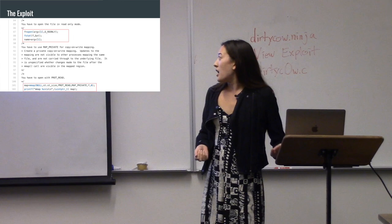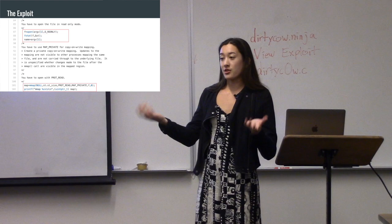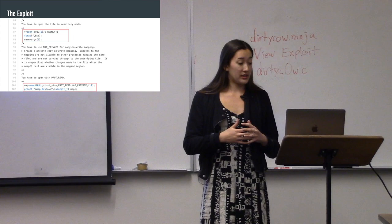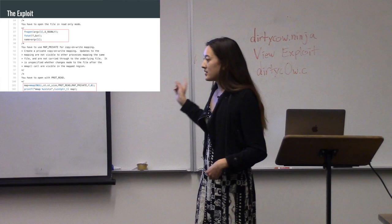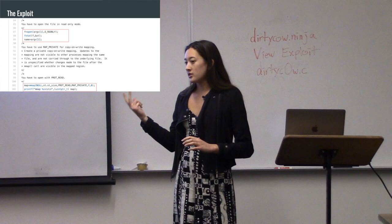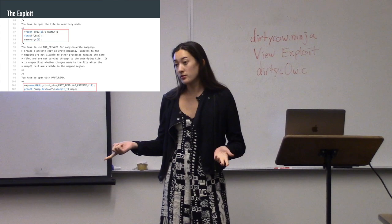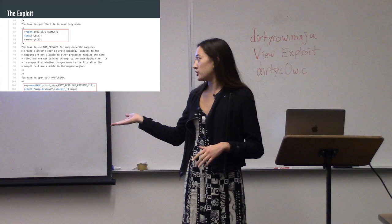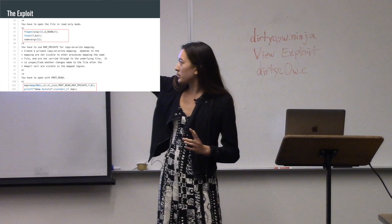This first bit of the exploit code sets up what we're going to do with the race condition. This specific script takes two arguments as input: the file you want to write to — which would be a root permissions file you shouldn't be able to write to — and the thing you want to write to it. First, you open your target file in read-only mode, and then you call mmap. mmap is a system call that creates a new mapped memory segment in your current process.